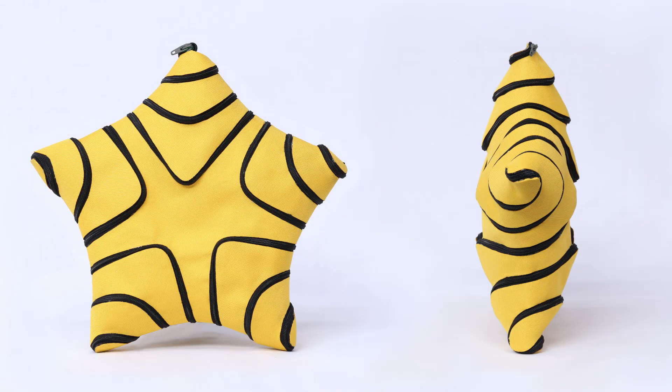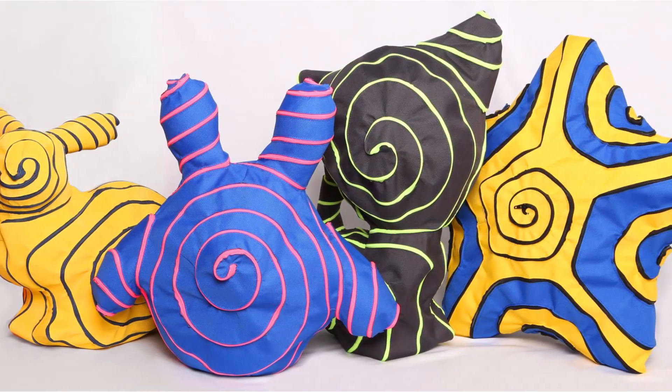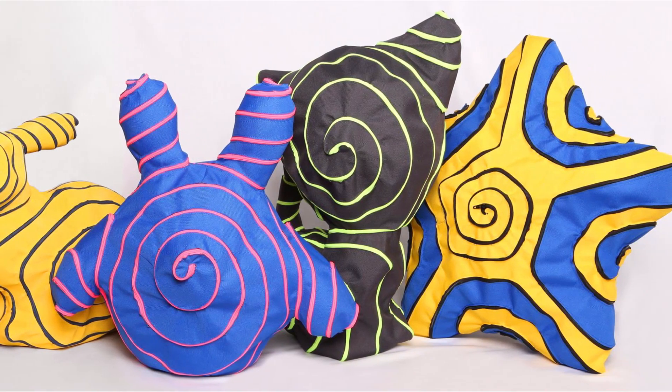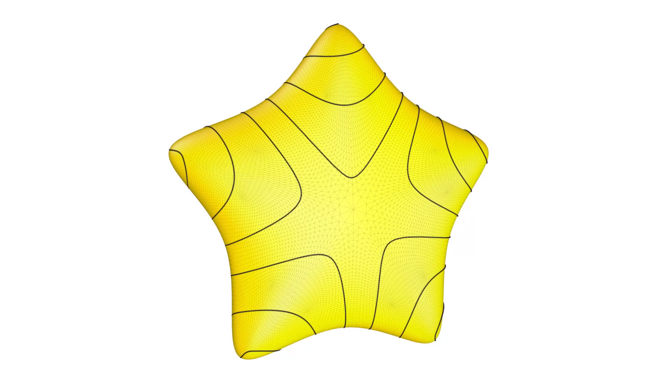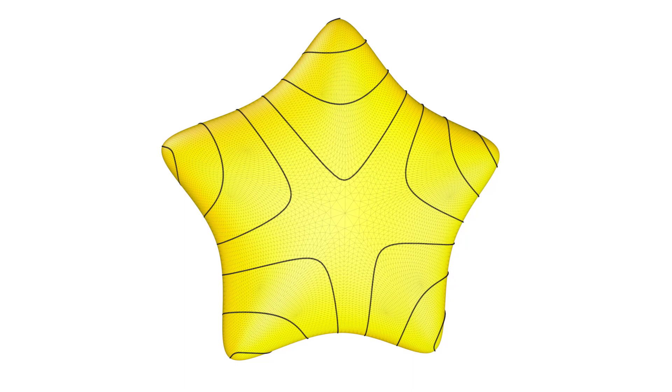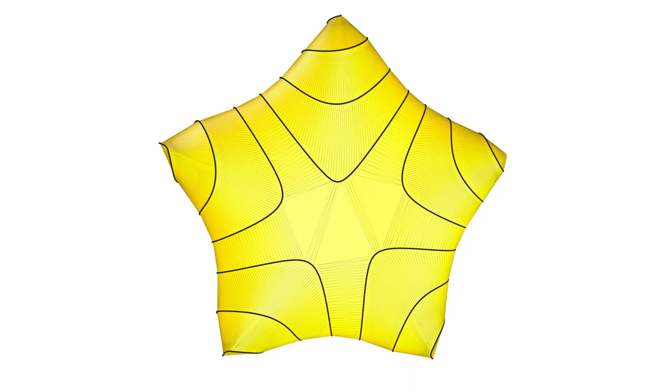In this video, we present a method to design and fabricate zippables for a wide range of target shapes. Our approach is to first design a single zipper curve on the surface of the desired shape, followed by a developable surface approximation.